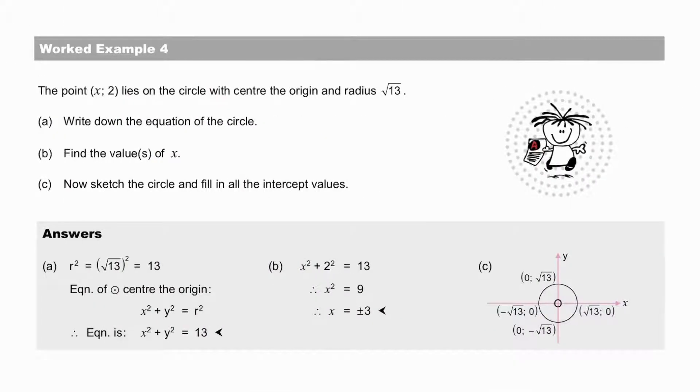In worked example 4, to determine the equation of the circle, all we need is the radius, which is square root 13. And therefore, the square of the radius is 13, and the equation is x squared plus y squared equal to 13. We find x by substitution, and in C, the axis intercepts.